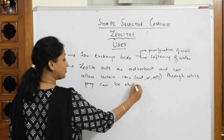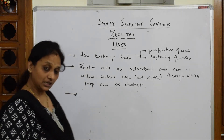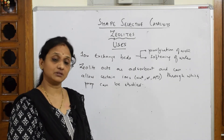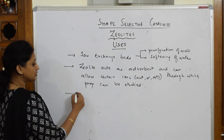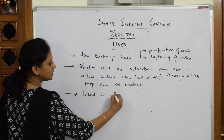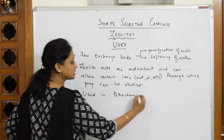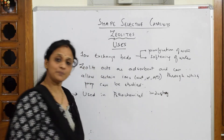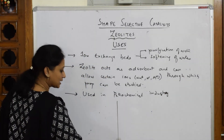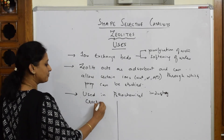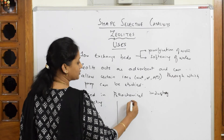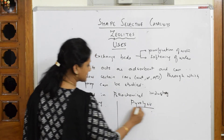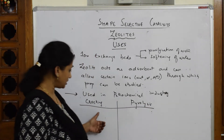Now, speaking about industrial purposes, zeolites also have importance in petrochemical industries. In the petrochemical industry, zeolites are used for two processes: one is the famous process called cracking, and the other is pyrolysis.